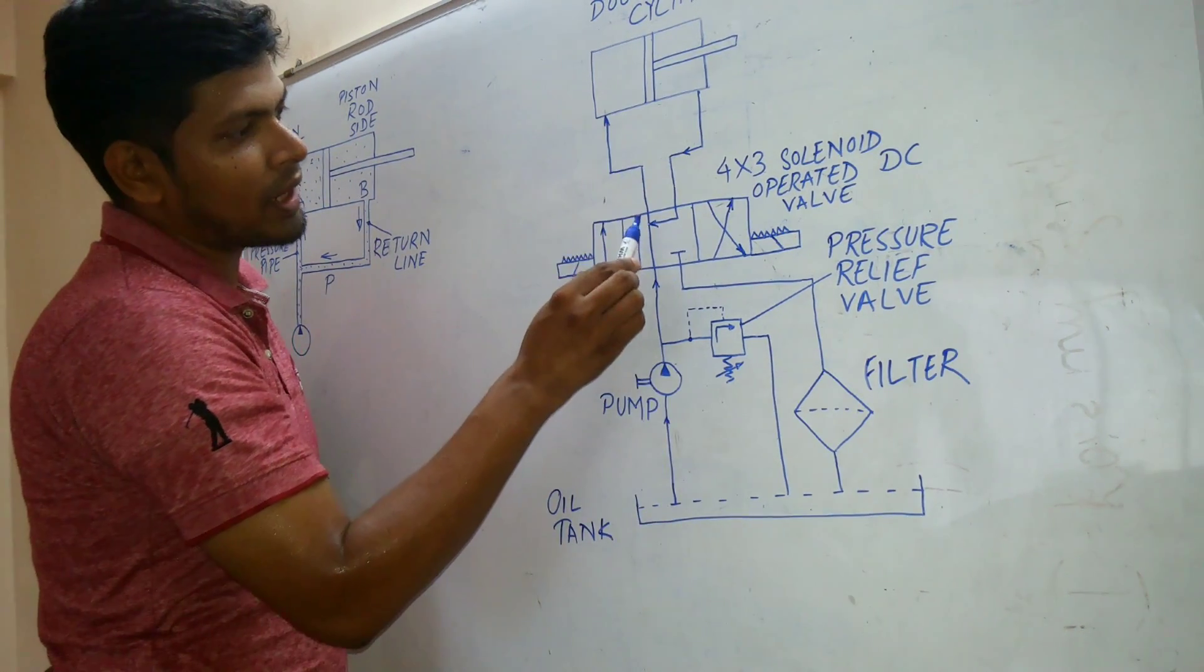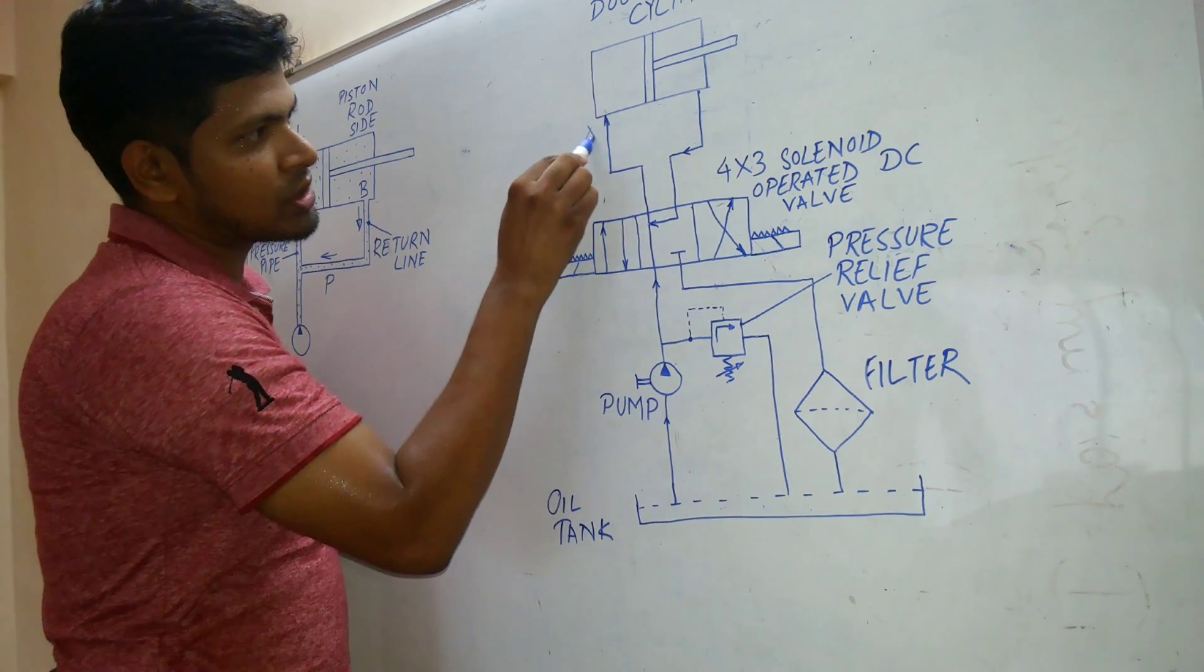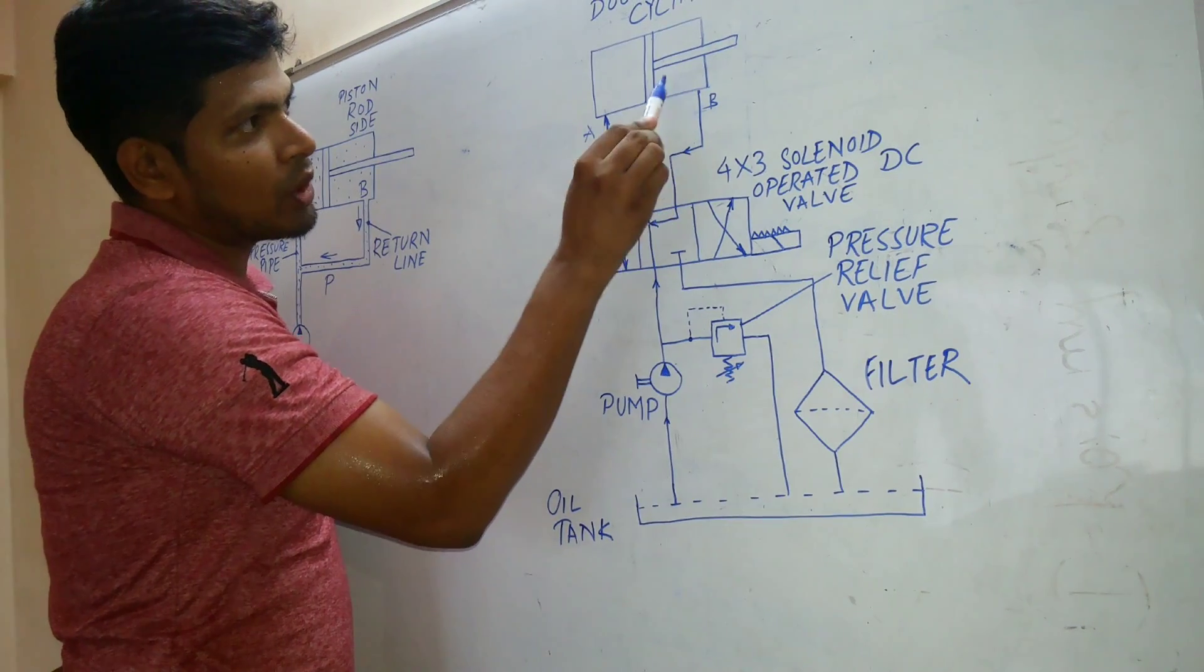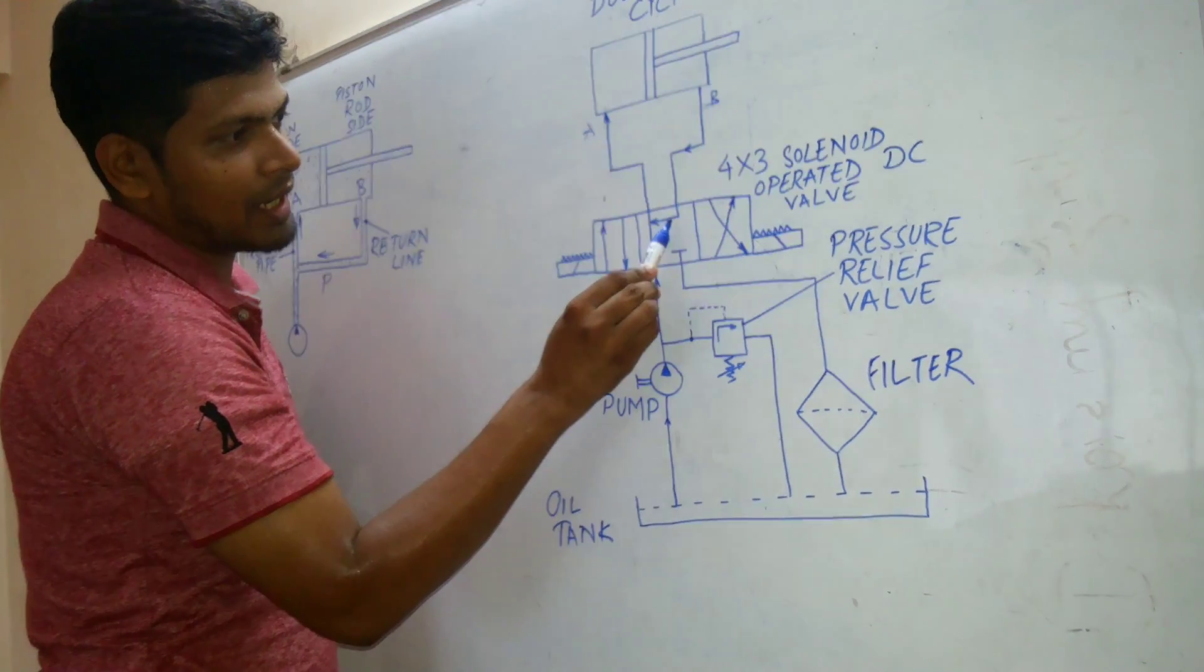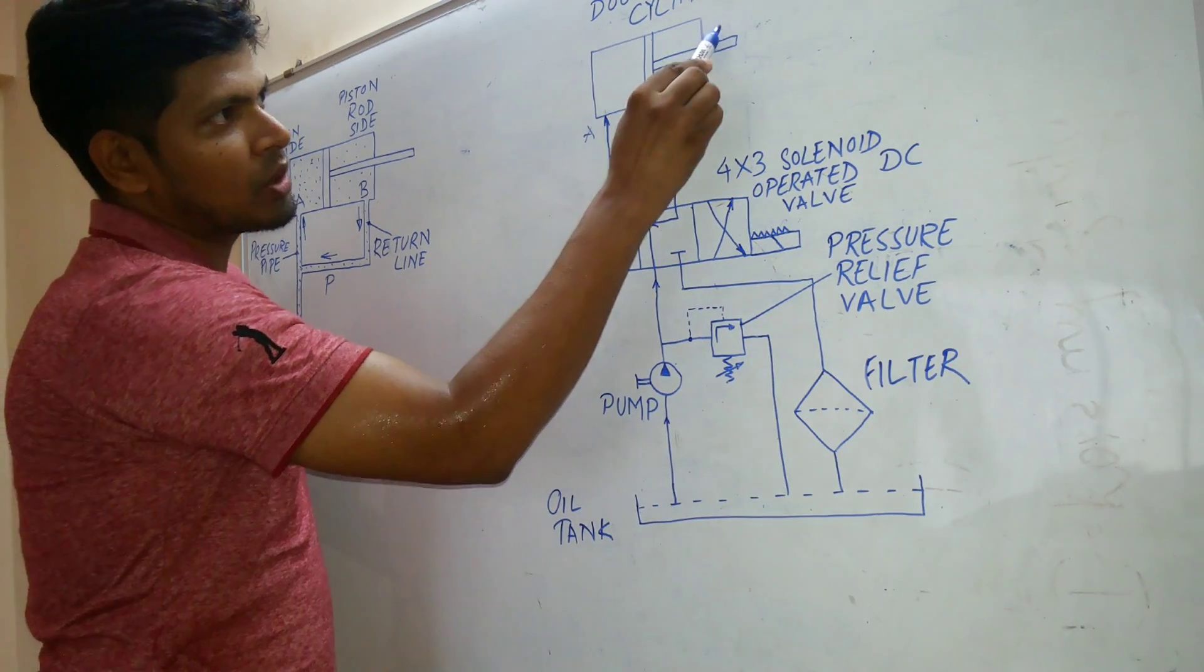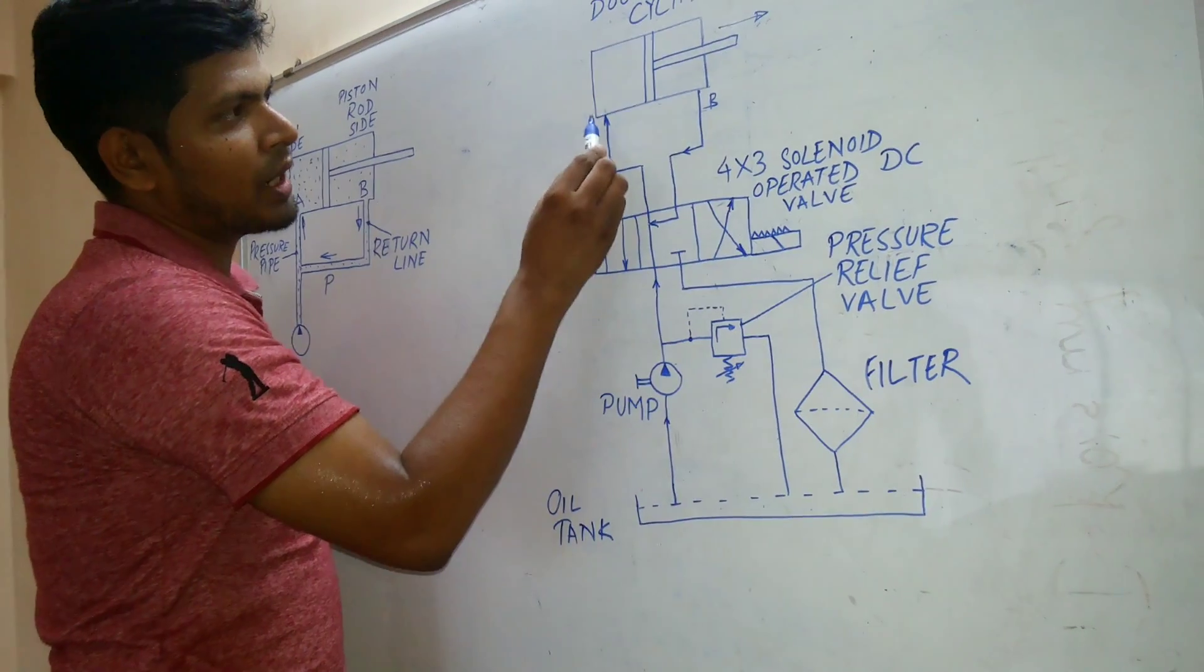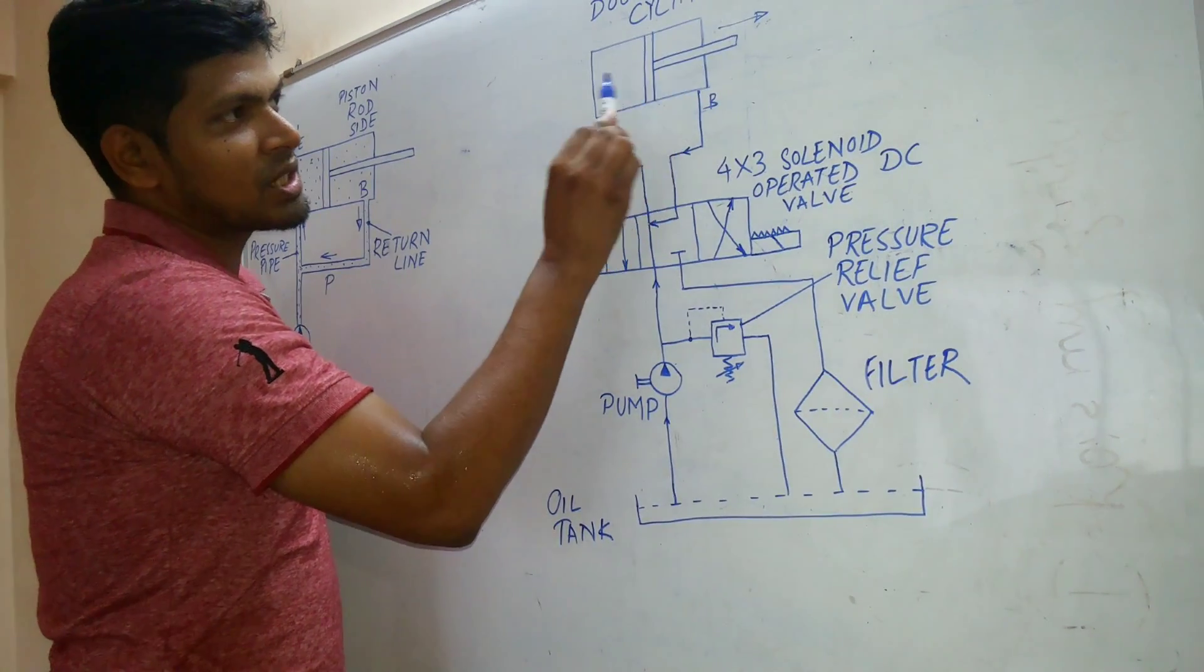During that stroke where the fluid is going to the port A, if this is port A and this is port B, then the port B, the liquid which is coming from the piston rod side goes and gets connected to the pressure line. And the piston moves towards right. The fluid enters from A on the piston side.